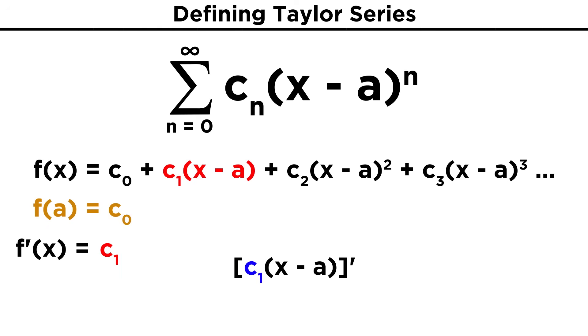To be clear, if we were to distribute before taking the derivative, we would get c one x minus c one a, and since c one a is just a number, that will go away, and c one x will become c one. For the other terms, we will use the chain rule. Starting with this one, the two comes down here, leaving an exponent of one, and then we multiply by the derivative of what's inside, which will just be one.